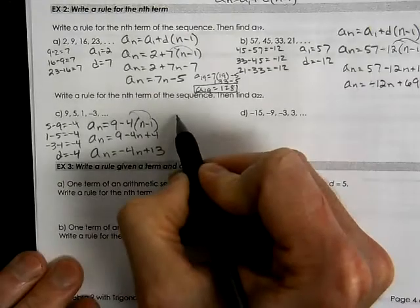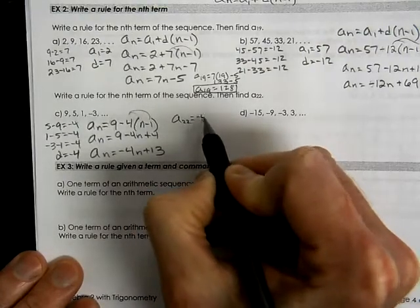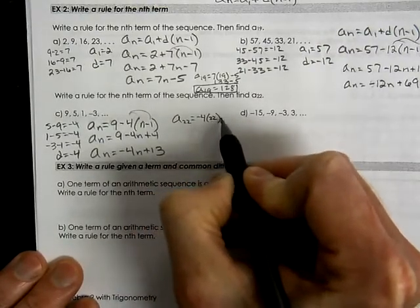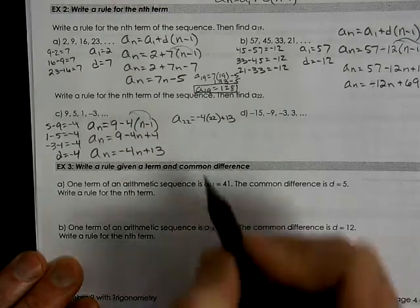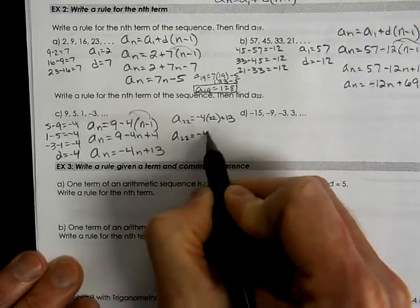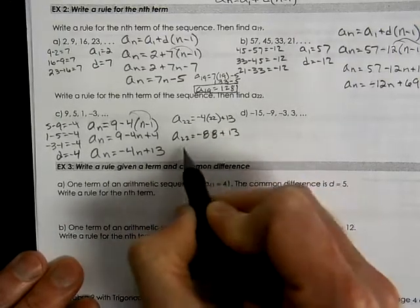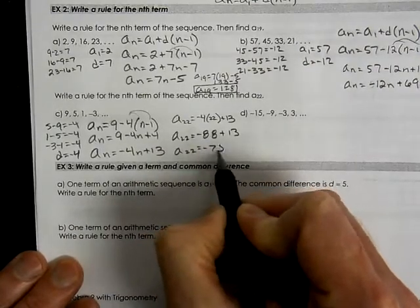And if we were going to figure out what A of 22 was, we would plug in a 22 for the n term. So A of 22 equals negative 88 plus 13. So we get negative 75.